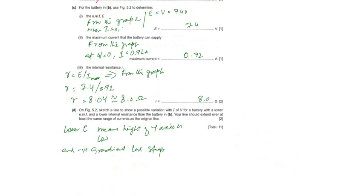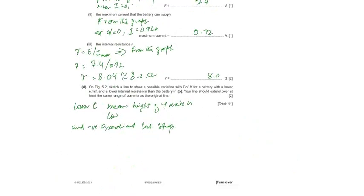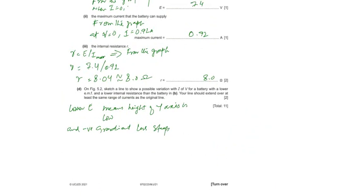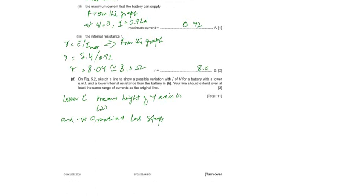On figure 5.2, draw the possible variation with I and V for a battery with a lower emf and lower internal resistance. Internal resistance is lower means the gradient is not so steep, it is less steep, and we should use the same range of current. Now this line is less steep, negative as well but less steep and within the range.